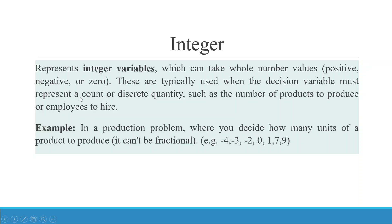Integer represents integer variables which can take whole number values — no fractions — positive, negative, or zero. These are typically used when the decision variable must represent a count or discrete quantity, such as the number of products to produce or employees to hire. Naturally, you cannot have employees in fractions. For example, in a production problem where you decide how many units to produce, values like -4, -3, -2, 0, 1, 7, and 9 are valid.